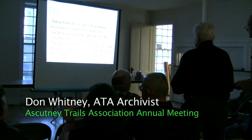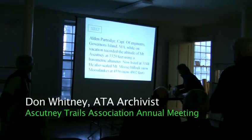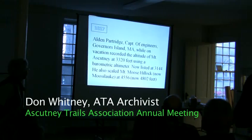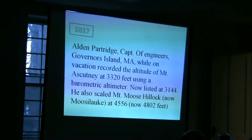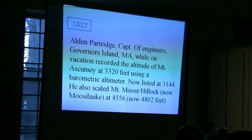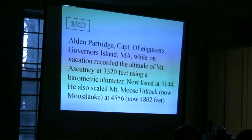This man was the captain of the so-called engineers, and it might have been in the early days of the geodetic survey people. He was evidently based in Governor's Island, Massachusetts. He was on vacation, so he came up here and measured the heights of Mount Ascutney, and he came out with 3,320 feet. Now we find that the elevation is 3,144, so it wasn't too far off. He also went up Mount Moosehillock, and they called it Mount Moose Hillock then, because there were a lot of moose around that area.